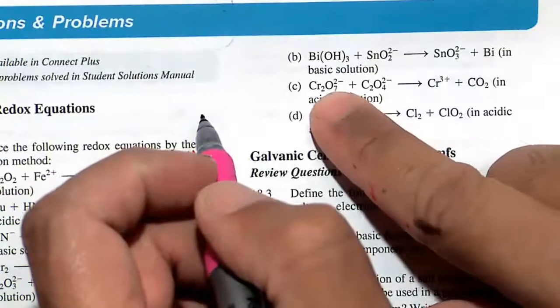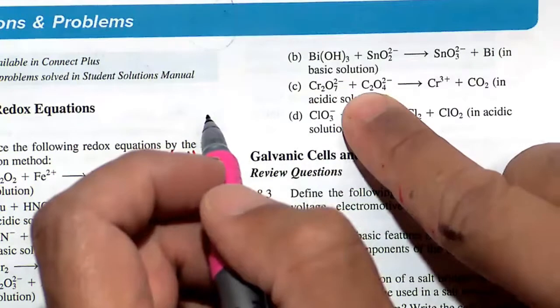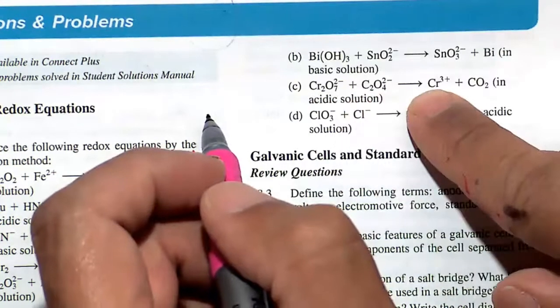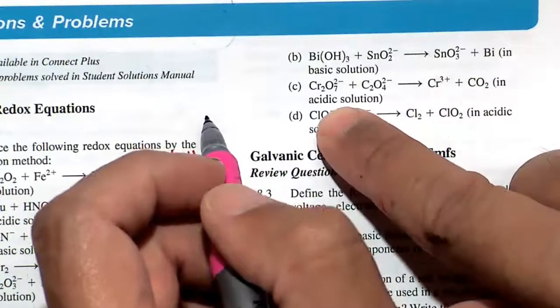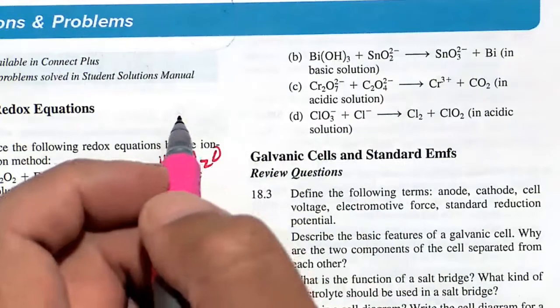All right, in part C here, we're asked to balance this equation. I believe this is dichromate, and I believe this is oxalate. And that's going to go to chromium plus 3 plus CO2. We've got plenty of H pluses around and plenty of waters around. So let's go ahead and balance this.